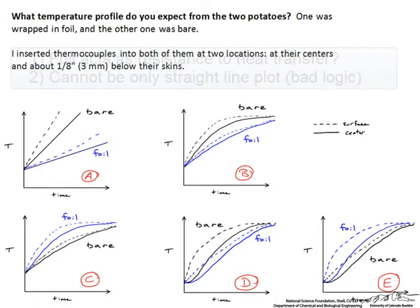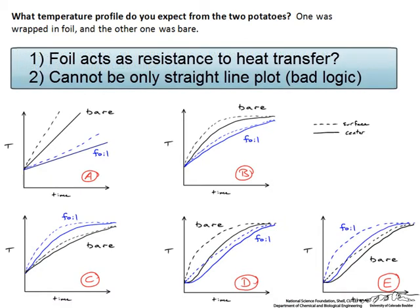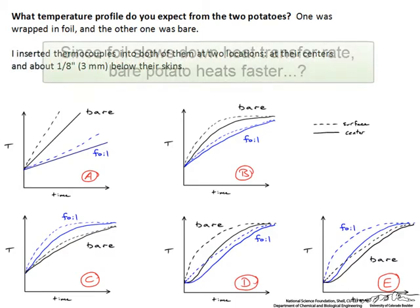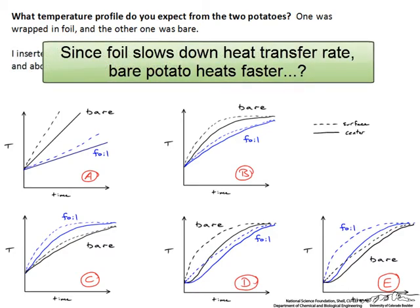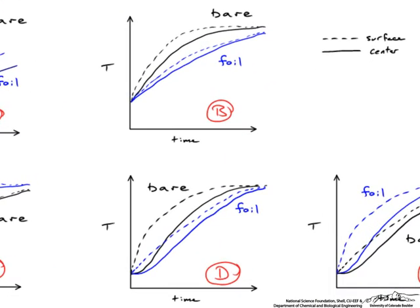Dave goes back to the exponential curve. The instructor likes the idea that foil might present some resistance to heat transfer and encourages him to keep going. Dave says it'd either be B or D. The main differences between B and D is that there seems to be a little bit of a lag for the temperature of the foil, whereas with plot B there is no lag, it just looks like the foil heats up slower, but Dave doesn't think that would be accurate.